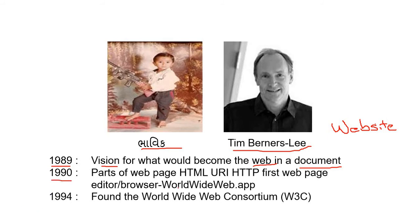After one year, in 1990, there were pages like HTML, URI, HTTP — the first web page, editor, and browser called WorldWideWeb. In 1990, there was a first web page through the browser — that was a web document. And in 1994, the World Wide Web Consortium was founded, known as W3C — W3 means three times W: World Wide Web.